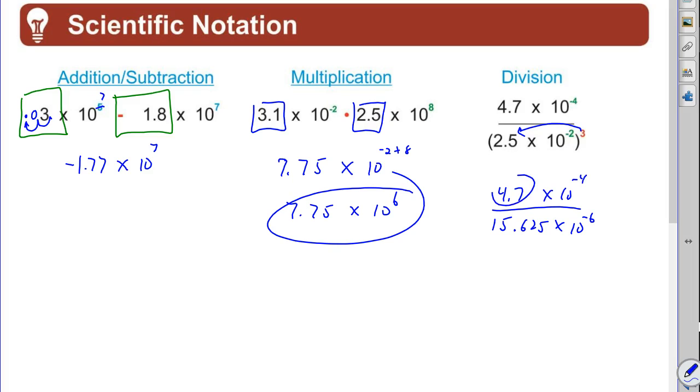I'm going to take my coefficients, my 4.7, and I'm going to divide it by 15.625, and I get 0.3008. Now remember, division of exponents: x to the a divided by x to the b equals x to the a minus b. You get minus a minus here, right? So we're going to end up with 0.3008 times 10 to the second.